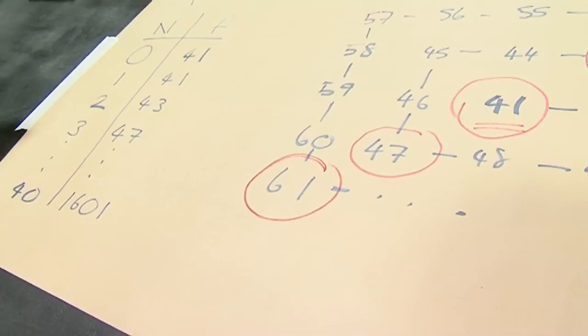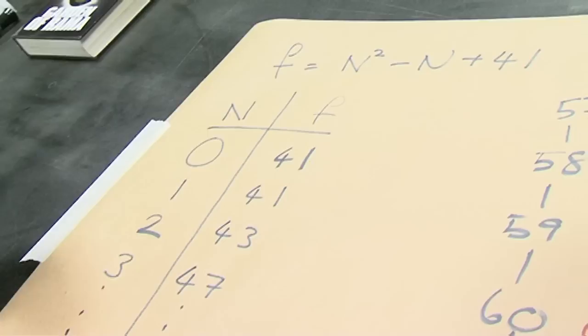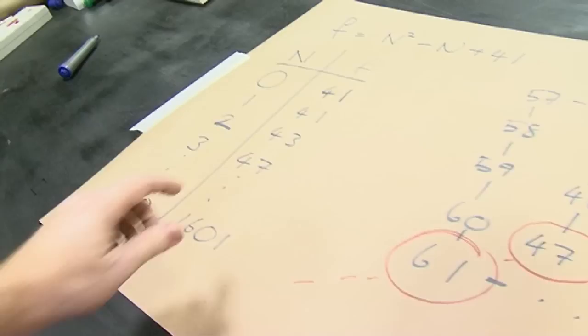And so what we're discovering is that all of the prime numbers generated by the quadratic series are found on this diagonal, the lead diagonal, of what we're calling an Ulam spiral. And every number in that series, as you go down, is going to sit along this line here.